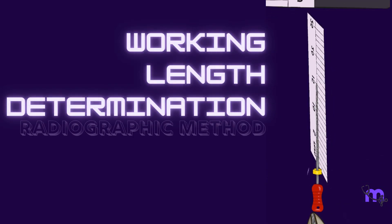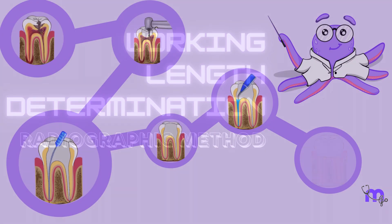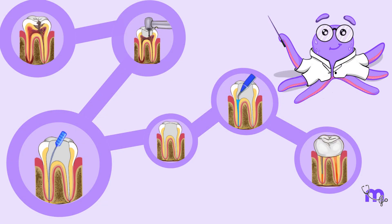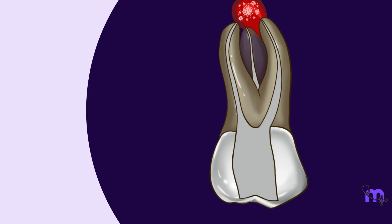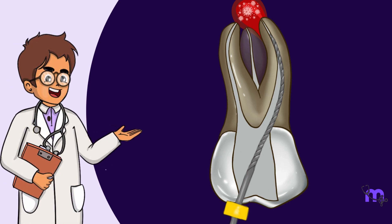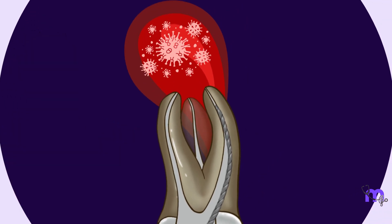Working length determination: radiographic method. Now that we have discussed the first step of root canal treatment — access cavity preparation — we shall move on to the next step: working length determination. Let us imagine a scenario where the root canal length is not recorded properly and is considerably short of the actual length of the canal. The bacteria residing at the apex would not get killed and the infection would persist.